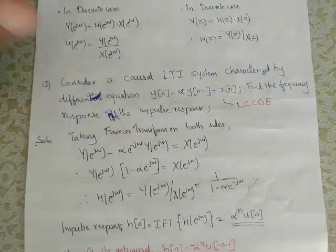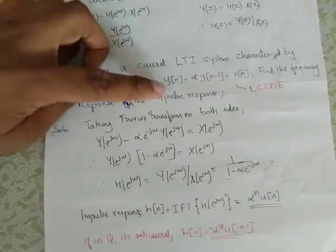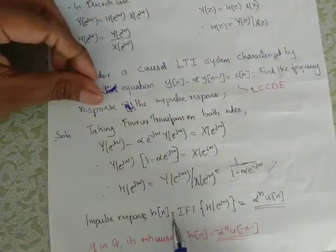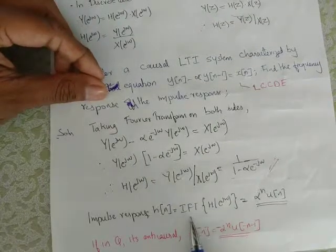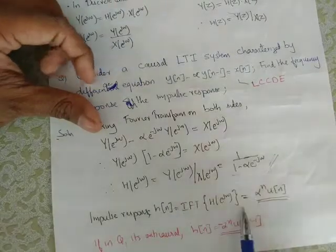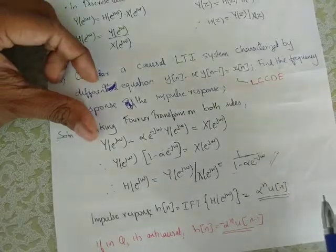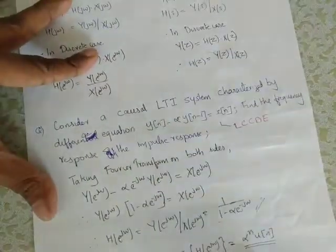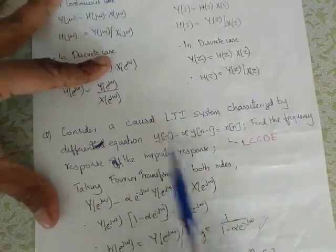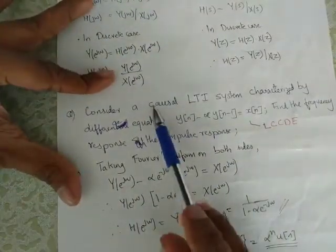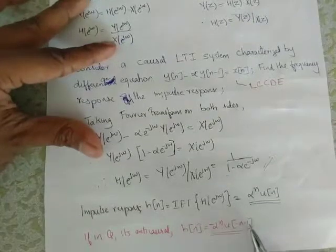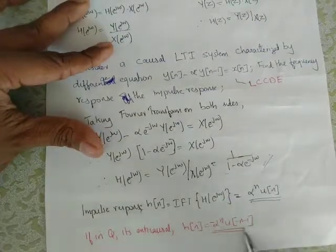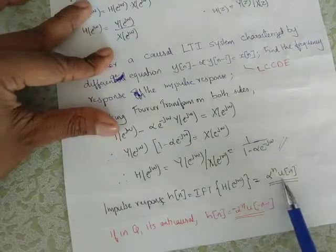Now for the second part, the impulse response. The impulse response h of n is obtained via the inverse Fourier transform of H of e raised j-omega. Since the system is causal, h of n equals alpha raised to n times u of n. If the system were non-causal, we would consider u of minus n minus 1, giving minus alpha raised to n times u of minus n minus 1.